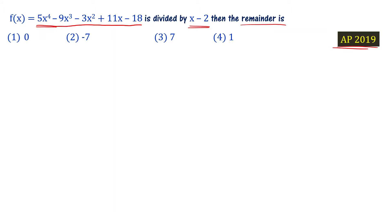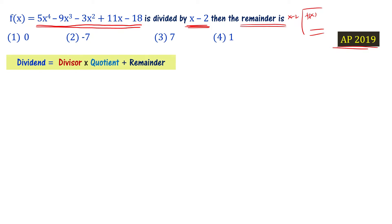f of x is a 4th degree polynomial divided by x minus 2. For the polynomial division, whatever remainder you get from dividing f of x by x minus 2 is going to be your answer. The dividend equals divisor times quotient plus remainder.